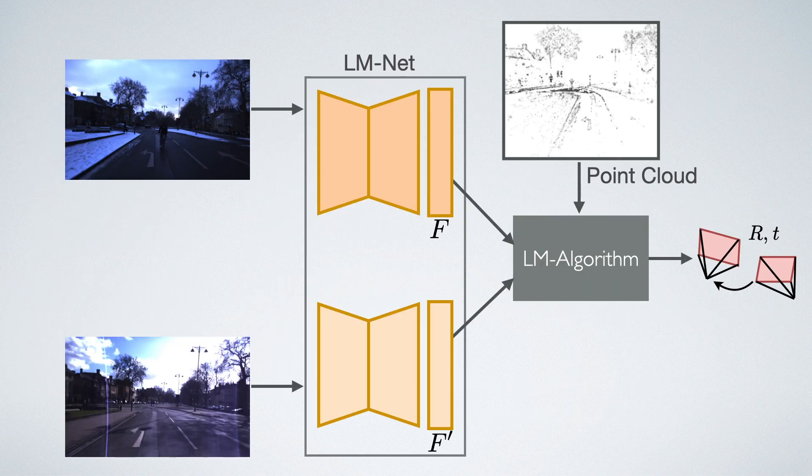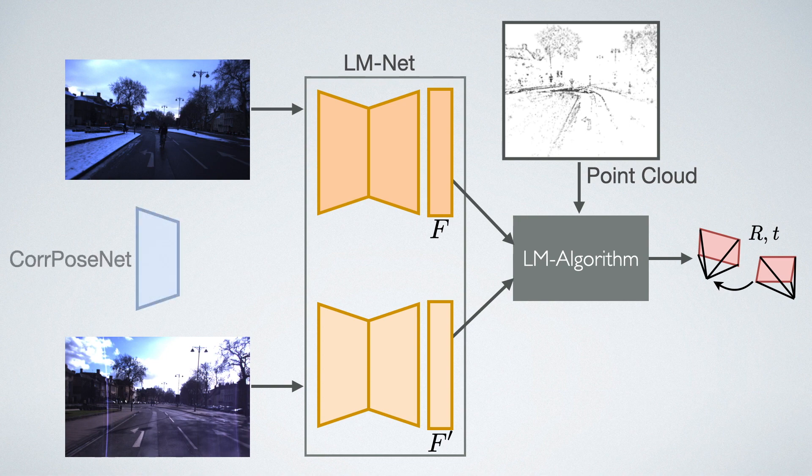To further improve the robustness of LMNet against large image baselines, we propose a pose estimation network, CorPoseNet, which regresses the relative pose to bootstrap the image alignment.